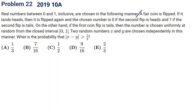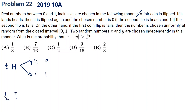A fair coin is flipped. If it lands heads — half chance — then flip again. The chosen number is 0 if the second flip is heads, or 1 if it's tails. So there's a one-fourth chance to get 0 and a one-fourth chance to get 1. The other half chance means choosing uniformly between 0 and 1.